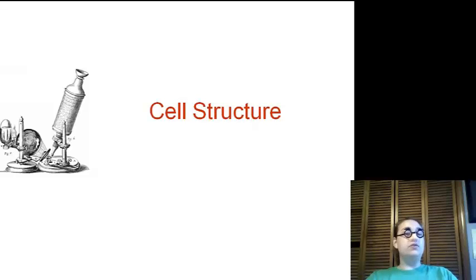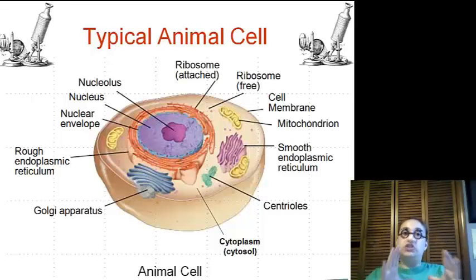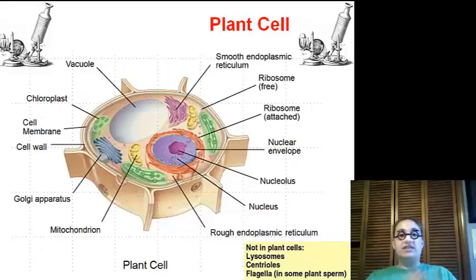Now, this should be review, so you should know some of these. So, talking about a typical animal cell, it's going to be round, or at least not a certain shape, versus our plant cell. Our plant cell has a cell wall, so it's going to have a rigid shape. Now, let's talk about the pieces.